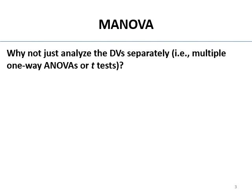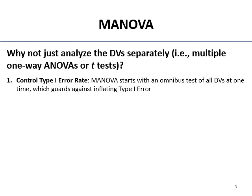So why not just analyze these DVs separately? Why not do multiple ANOVAs or multiple t-tests and call it a day? Number one is the usual: same study, multiple tests are being conducted. Each one of those tests has a type one error rate. They're additive over the family of tests — we call that type one error inflation, family-wise type one error inflation. So you need to do something that keeps your type one error rate low.